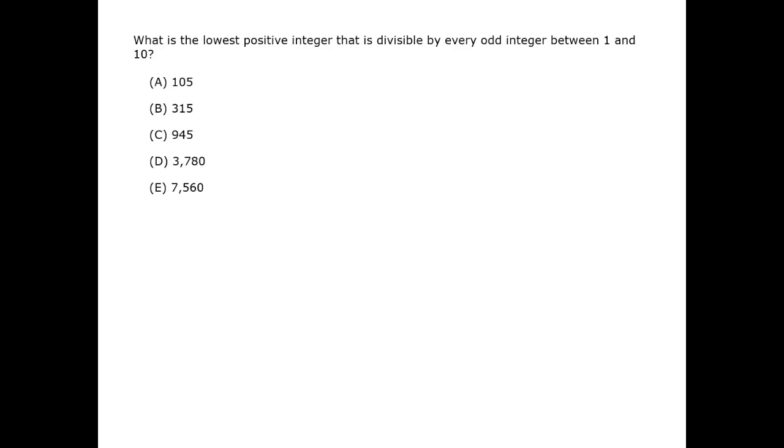To be divisible by all of these numbers, our positive integer must have as factors at least 1, 5, 7, and two 3s. With two 3s, we'll cover both 3 and 9.